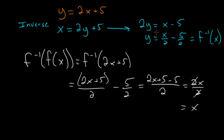So now we know for sure that this x over 2 minus 5 halves is our g of x. So this is the final answer.